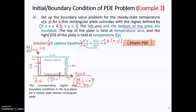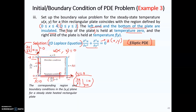The top of the plate has zero temperature, so U(x,2) = 0 for all x locations. The right end of the plate at x equal to 4 is maintained at a temperature given by a function f(y). Therefore, the temperature at x equal to 4 for all y locations is equal to this f(y) function.